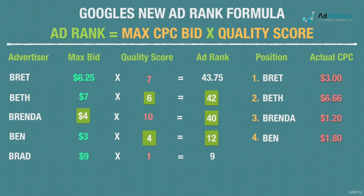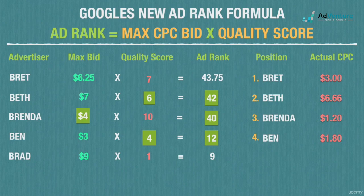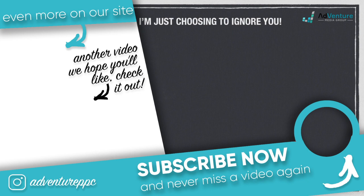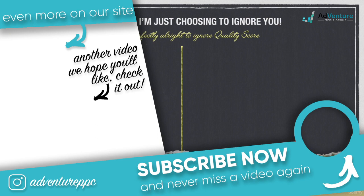We can never know the ad ranks of advertisers above or below us, so we never actually know what anyone else's actual CPCs will be. The important thing is to appreciate the influence of quality score on actual click prices and be acutely aware of your quality scores when assessing account health. The better your quality score, the cheaper your clicks will be.